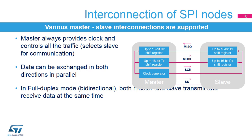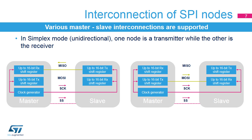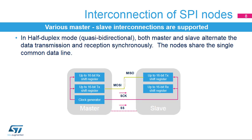In full duplex mode, both data lines are used and synchronous data flows in both directions. In simplex mode, one node transmits data while the other receives the data; data only flows in one direction. Depending on the communication direction, only one data line is used. Unused SPI pins can be used for other purposes. Half duplex mode integrates the previous two modes by sharing a single line for data exchanges, and data flows in a single direction at a time.